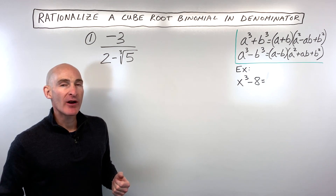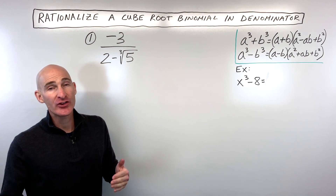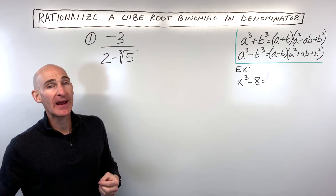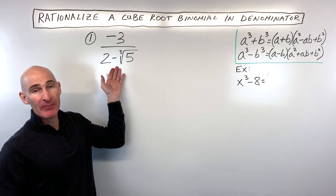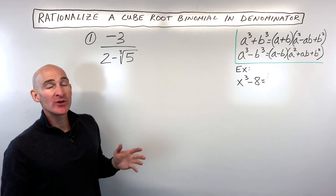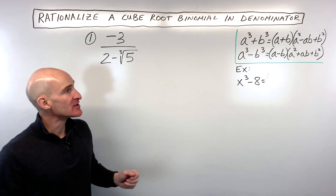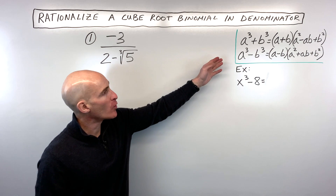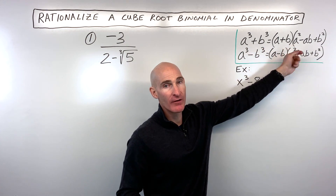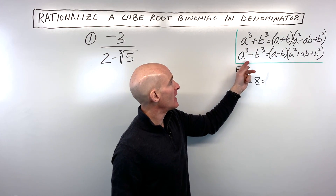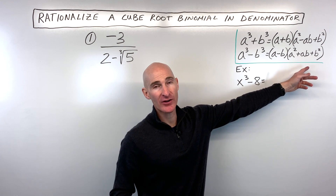In this lesson, we're going to talk about how to rationalize a cube root binomial in the denominator. We're going to go through two examples, and before we dive in, we'll do a quick review of sum of two cubes factoring and difference of two cubes factoring.